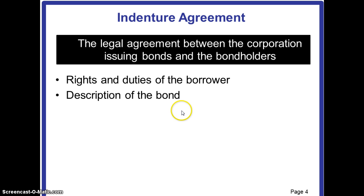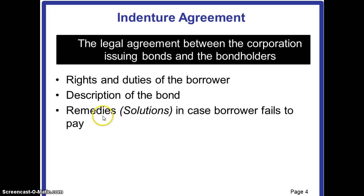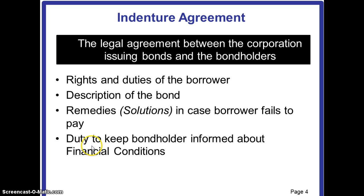The indenture agreement also gives a description of the bond, which may include the amount of the interest payments, the date on which the interest will be paid, as well as the date on which the principal amount will be paid. The indenture agreement will also mention the remedies — that is, the solutions — in case the borrower fails to pay either the interest amount or the principal amount on maturity. It also specifies that it is the duty of the borrower, that is the corporation, to keep the bond holder informed about the financial conditions of the corporation.